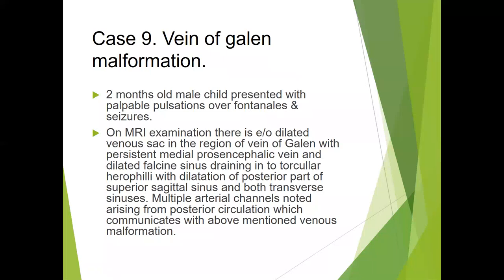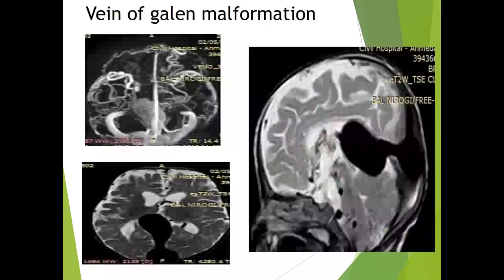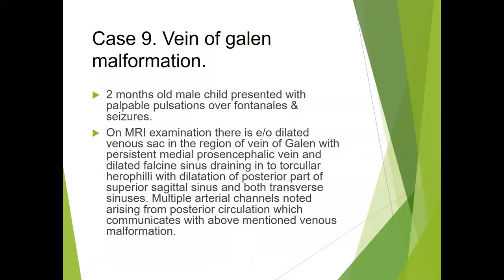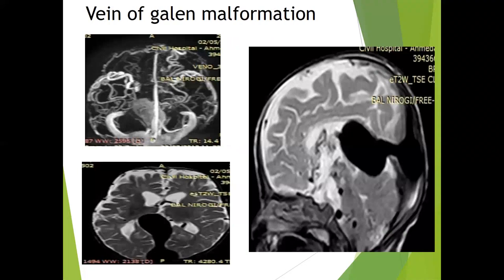The ninth case was of vein of Galen malformation, which is a misnomer. A two-month-old child presented with palpable pulsation over the fontanelle and seizure. On MR examination, there is evidence of dilated venous structures in the region of the vein of Galen with persistent median prosencephalic vein and dilated sinuses, including the posterior part of the superior sagittal sinus and both transverse sinuses. Multiple vascular channels arise from the posterior circulation communicating with the venous malformation, as seen on angio reconstruction.